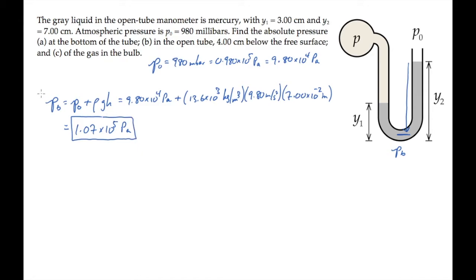Part B asks for the pressure at a depth of 4 centimeters below the same reference level. That's the pressure right here, and we can label that p4. So we make a very similar calculation, just replacing h with 4 centimeters in this case.